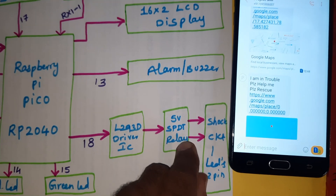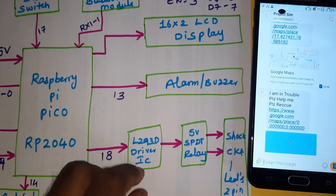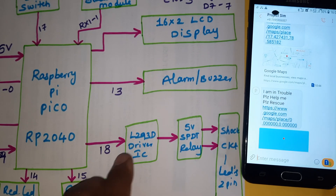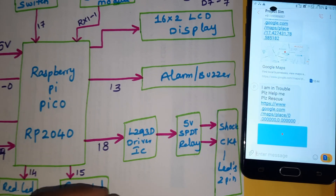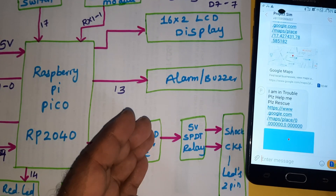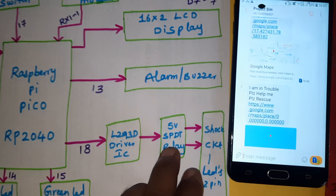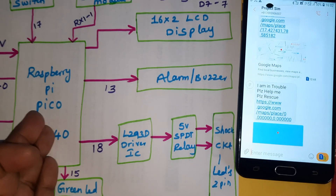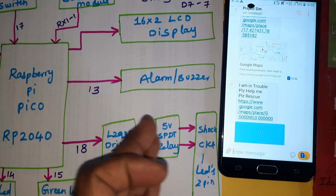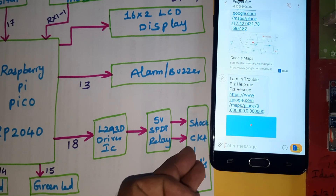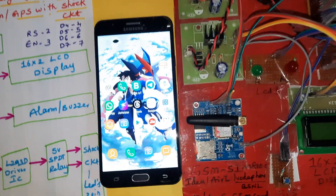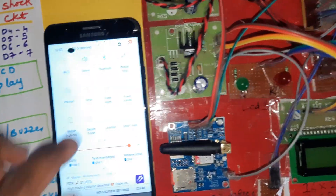We are using the L293D driver because the Raspberry Pi board works under 3.3 volts while the relay works under 5 volts. The driver IC works from 0 to 40 volts - it takes the input, triggers the relay, and the relay starts the shock circuit. Whenever a pulse is given to the L293D, the pulse is sent to the relay, and the relay activates the shock circuit. This is our main block diagram of the project.